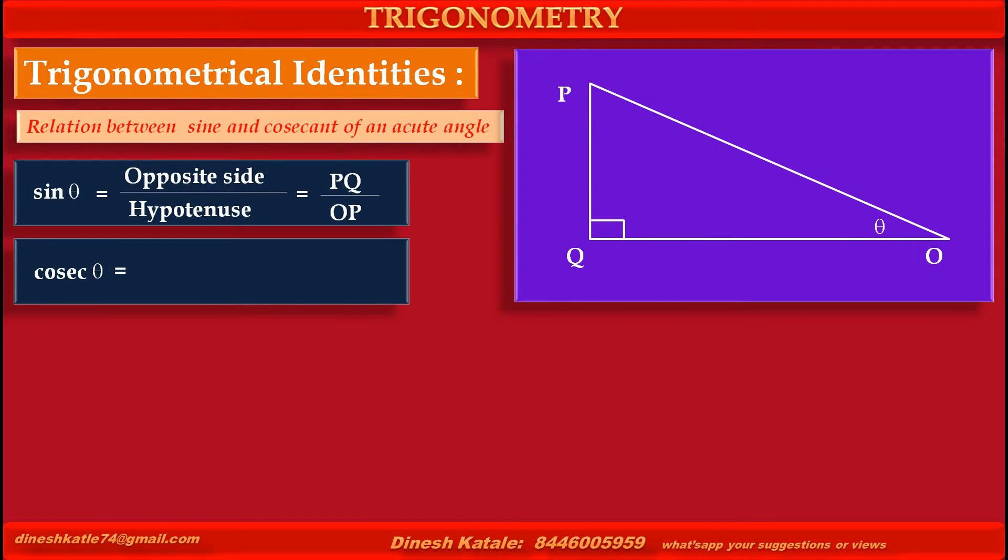Cosec theta is equal to hypotenuse upon opposite side is equal to OP, hypotenuse, upon PQ, opposite side of theta. Means we get cosec theta is equal to OP upon PQ.